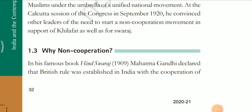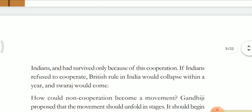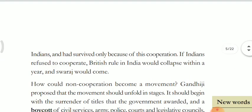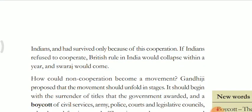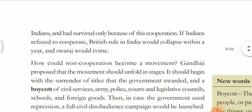1.3 Why Non-Cooperation. In his famous book Hind Swaraj, Mahatma Gandhi declared that British rule was established in India with the cooperation of Indians and had survived only because of this cooperation. If Indians refused to cooperate, British rule in India would collapse within a year and Swaraj would come.